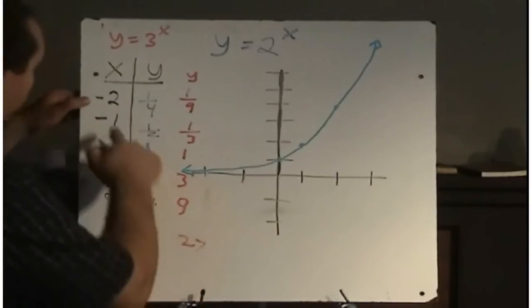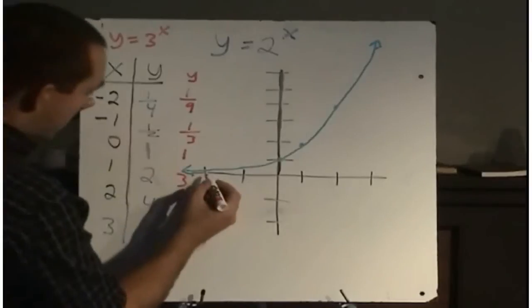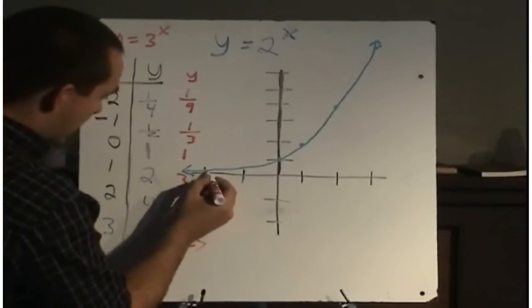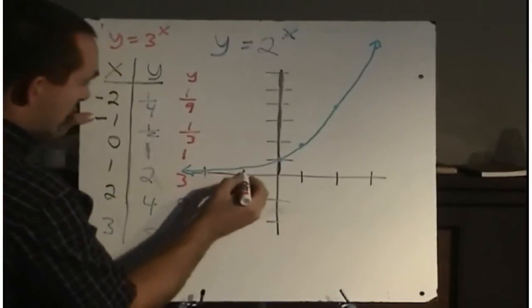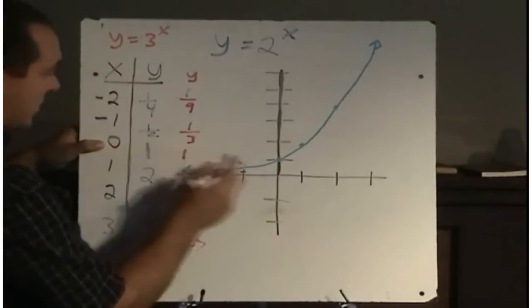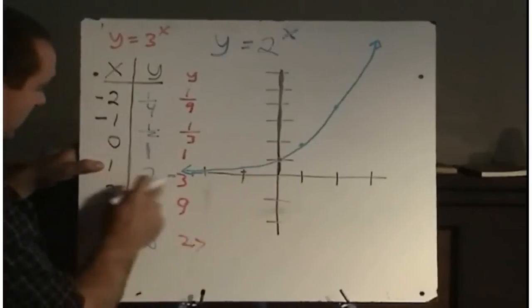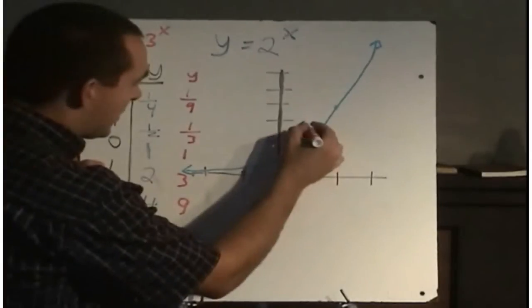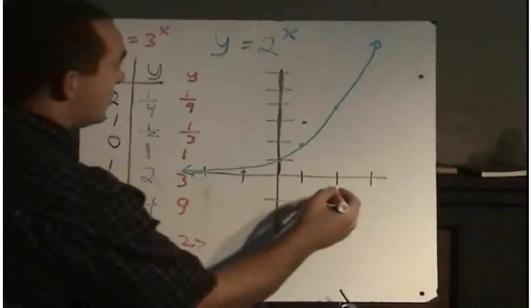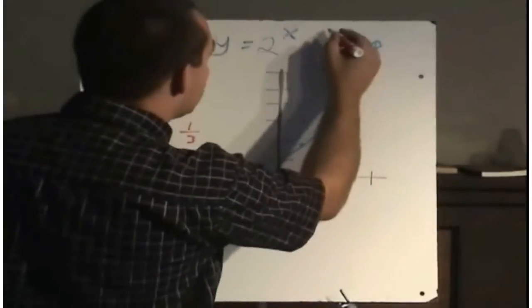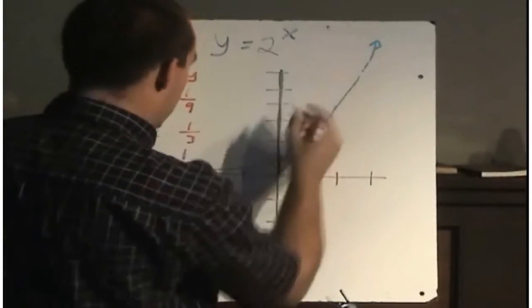So we're plotting these points on our graph. Negative 2 is 1 ninth, that's pretty tiny. Negative 1 is a third. So when x is 0, y is 1, goes to the same point. When x is 1, y is now 3. And when x is 2, y is 9, which would be way, way up.